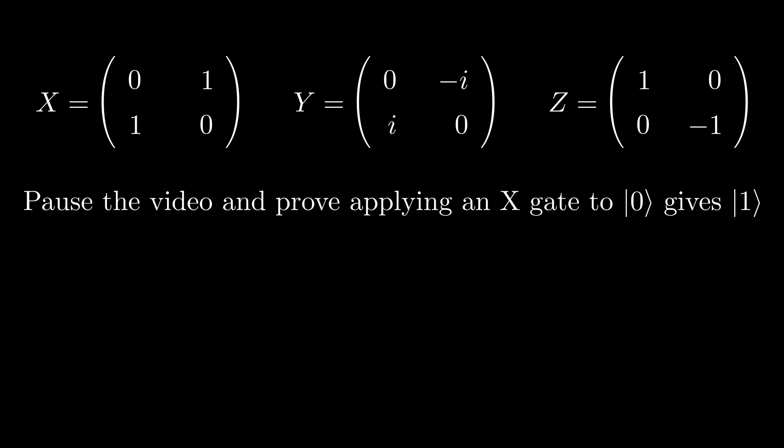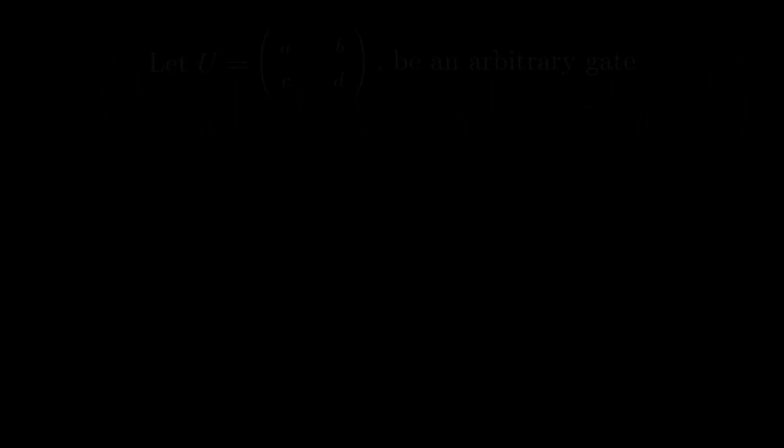In Dirac notation, if we want to apply a quantum gate, we still use the matrices, but instead of using matrix multiplication, we look at the columns of the matrix.